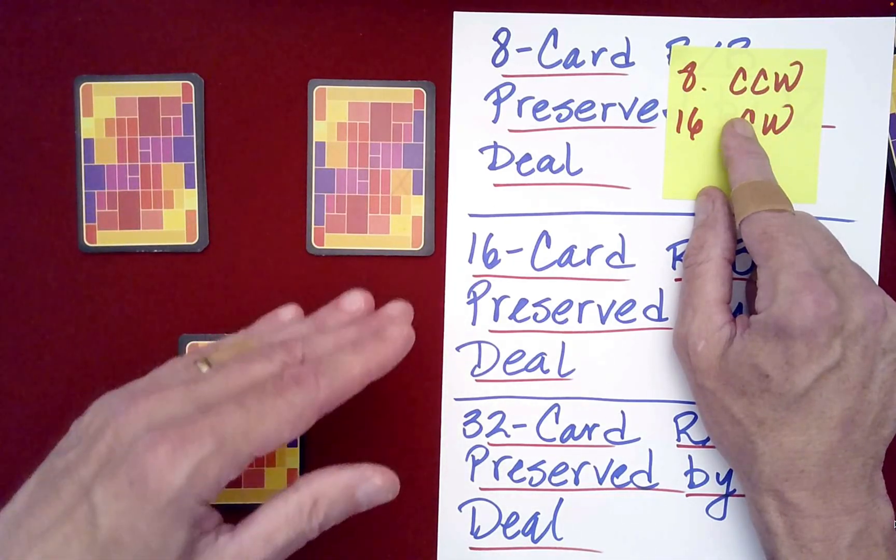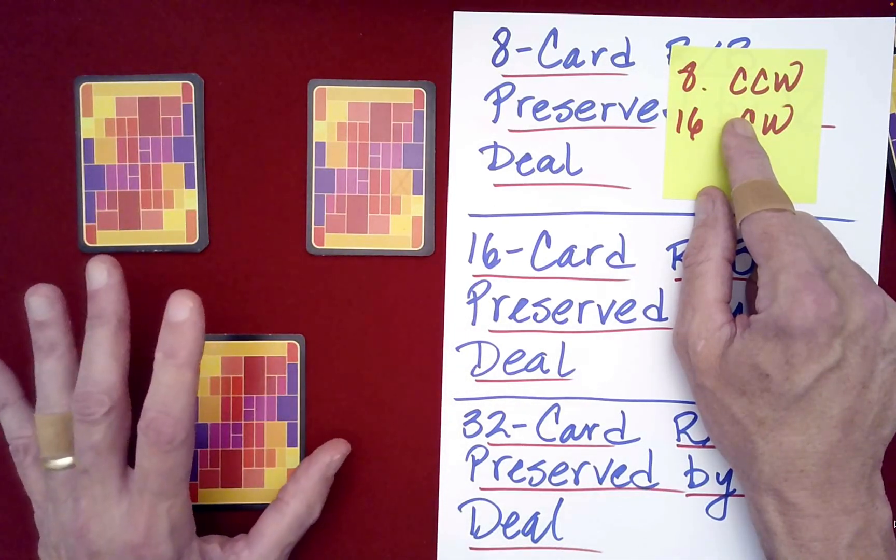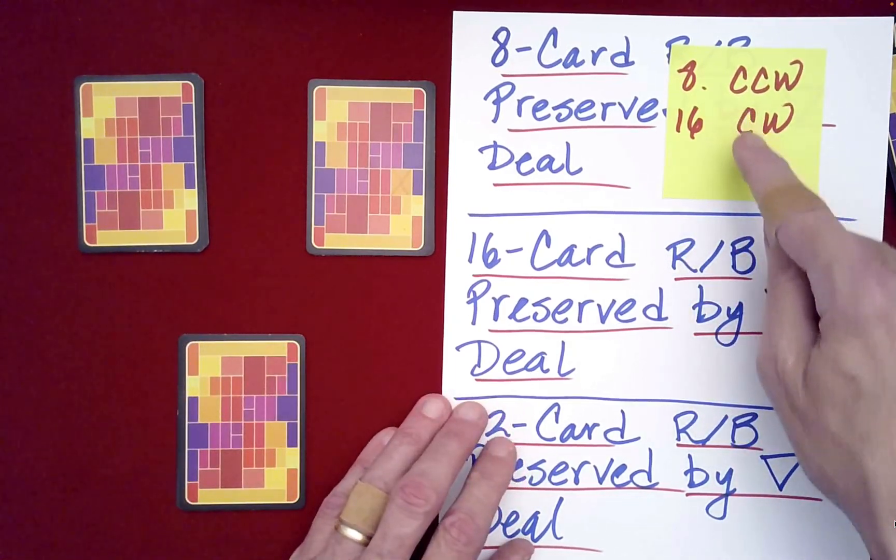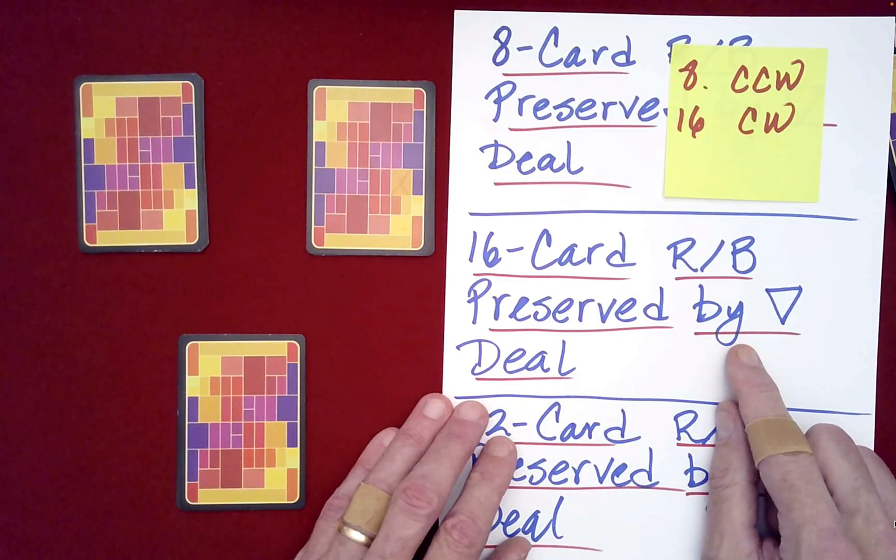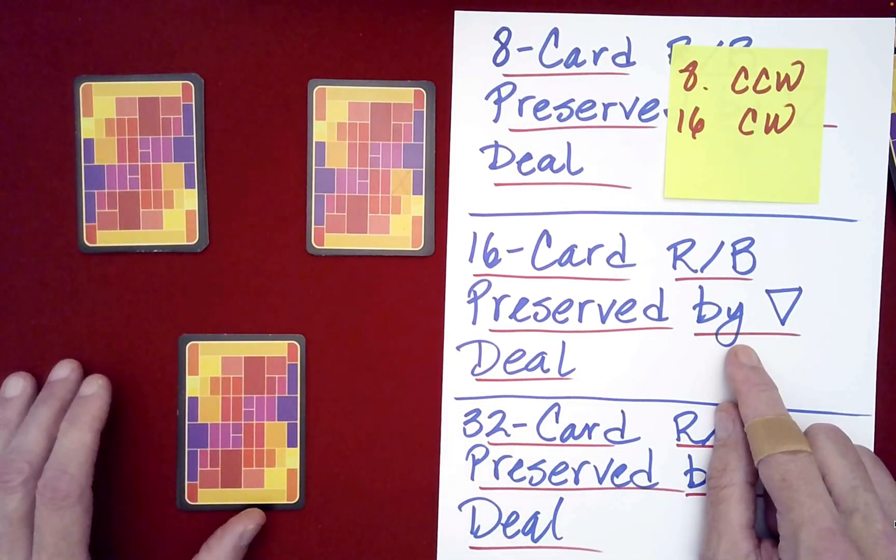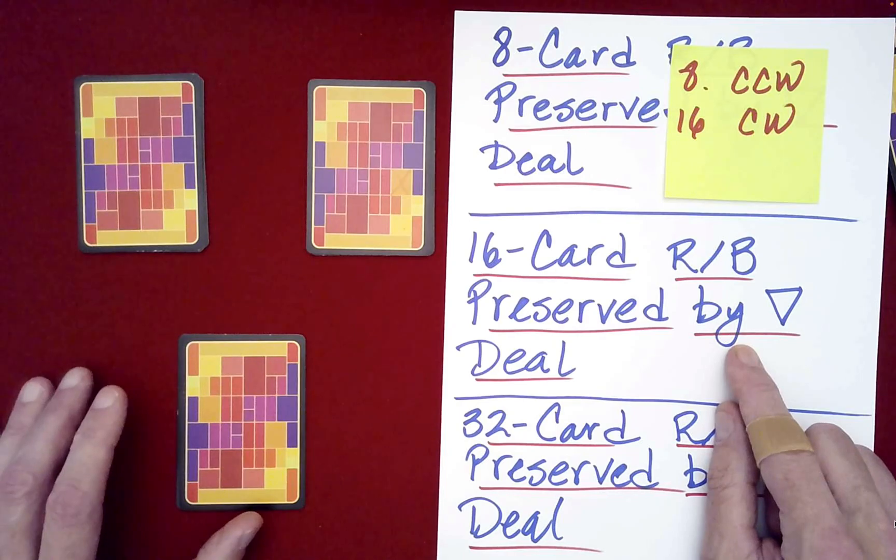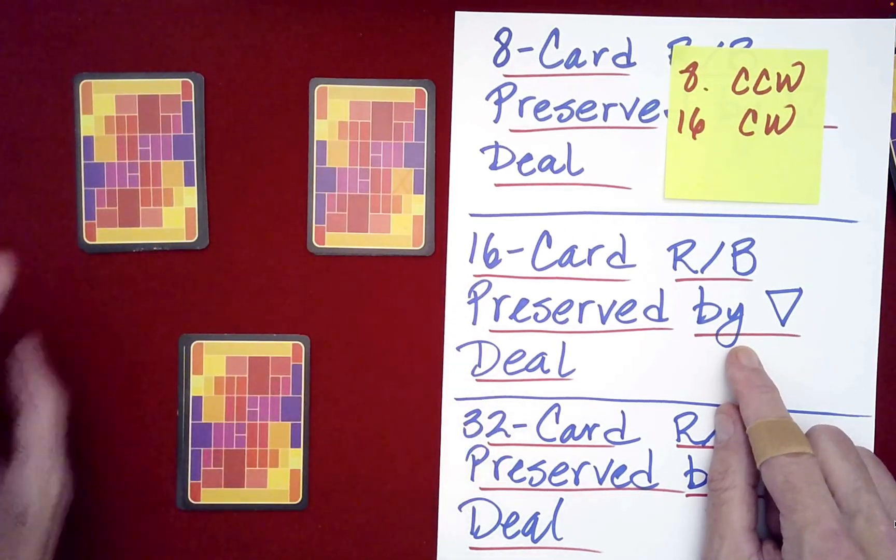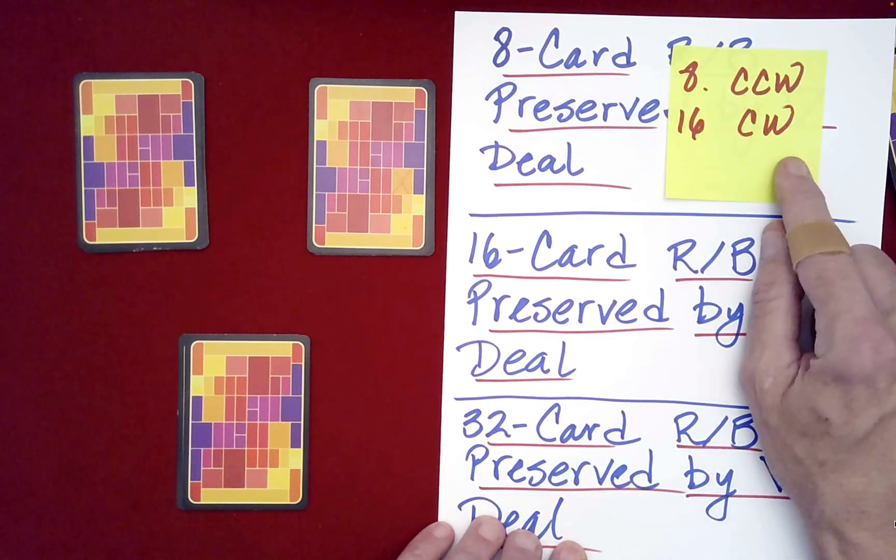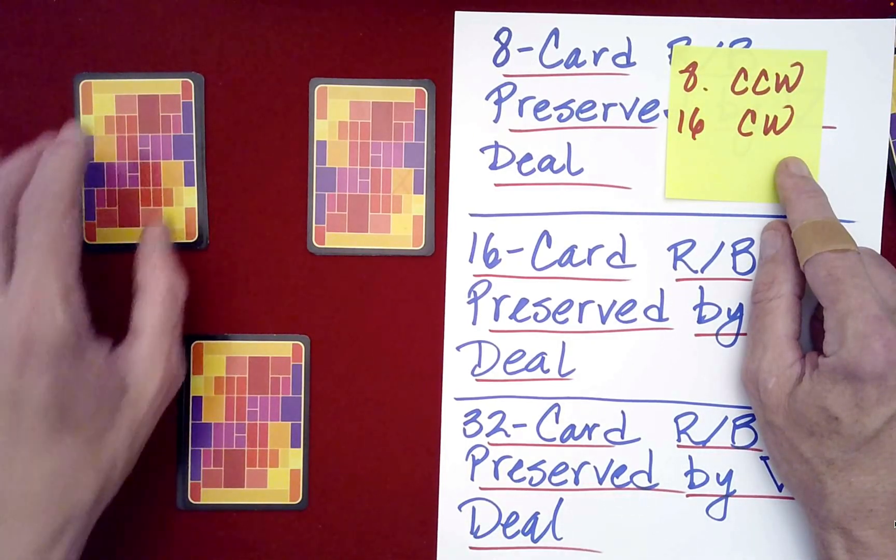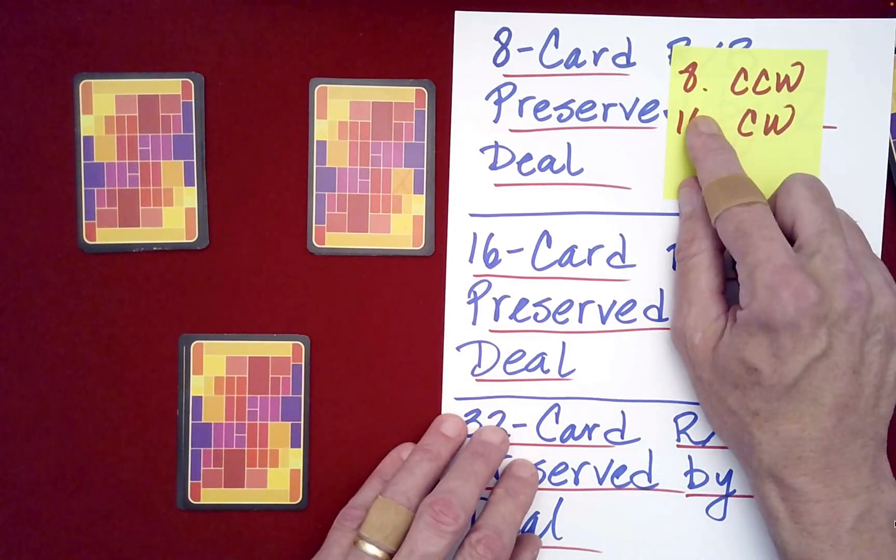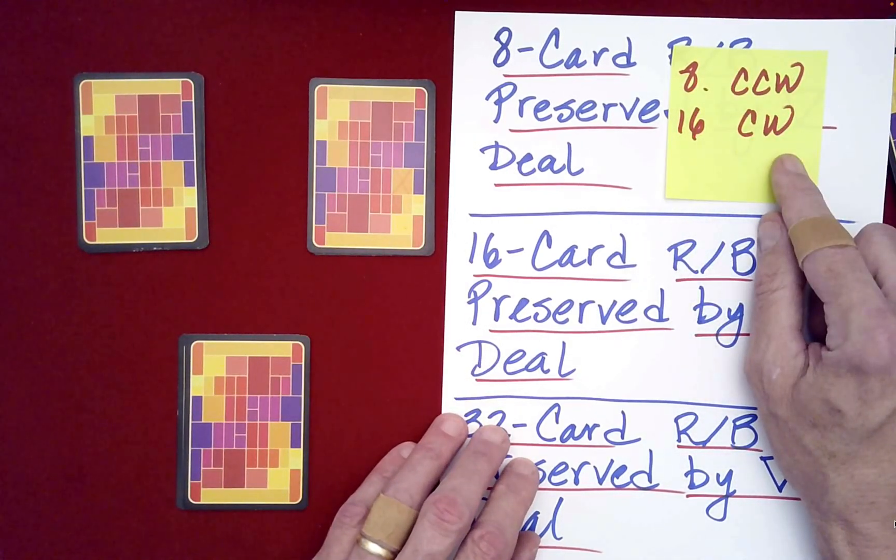Now, if you do that, when you're done stacking, it's still alternating. Okay, and then what's really cool is when you go to a packet of 16, and you deal them out into these, you know, three piles, you'll be able to preserve that alternating structure by starting anywhere with your, you know, stacking. But this time, you need to stack them in a clockwise direction. Okay, so counterclockwise for eight, clockwise for 16.